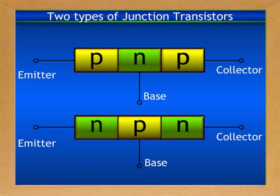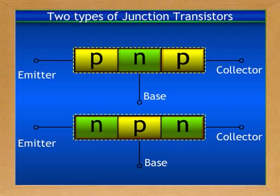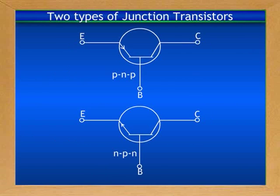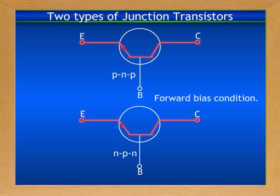The three terminals are called emitter, base, and collector. For convenience, the two types of junction transistors are represented by suitable symbols in electronic circuits, as you can see in the slide. In these symbols, the emitter is shown by an arrow which indicates the conventional direction of current flow under forward bias condition.